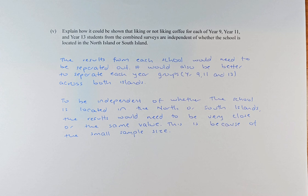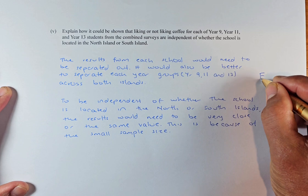Unfortunately, it's quite impossible to be exactly the same value or very, very close. So in that case, I suggest that we are going to separate the result from both the North and South Island as well as the year 9, year 11 and year 13 from both islands. This is how you argue your case. If you can get that argument right, that is going to be excellent or E7 in this paper.